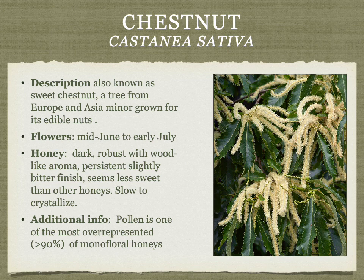Chestnut is a tree grown for its nuts in Europe, producing a very unique honey. It has a relatively strong taste with a wood-like aroma and sometimes a slightly bitter finish — some people don't like it, but it's personally very enjoyable. It's unique in that chestnut is one of the most overrepresented pollens in monofloral honey, requiring usually 90% or more to be considered monofloral.